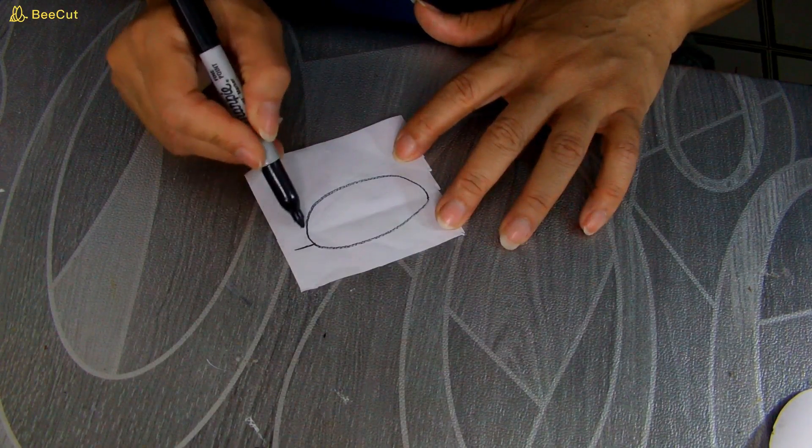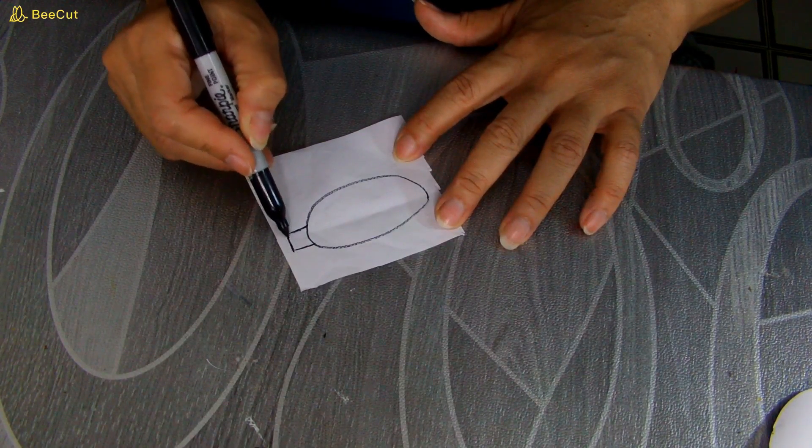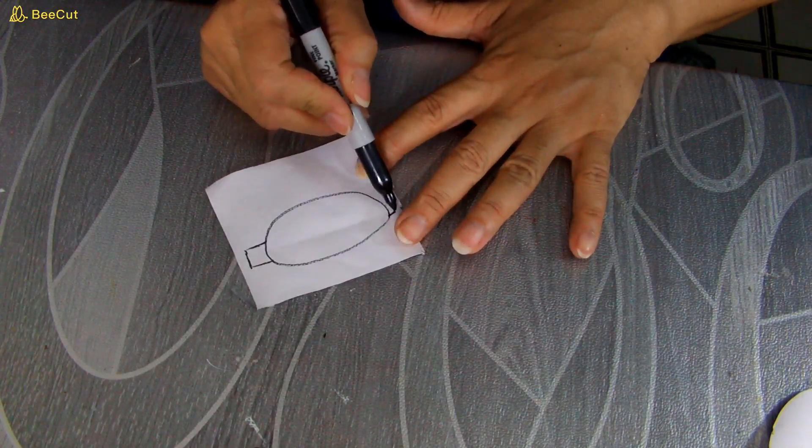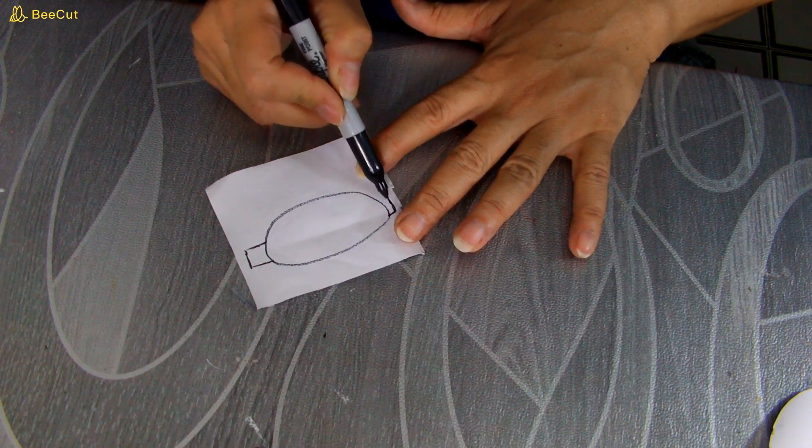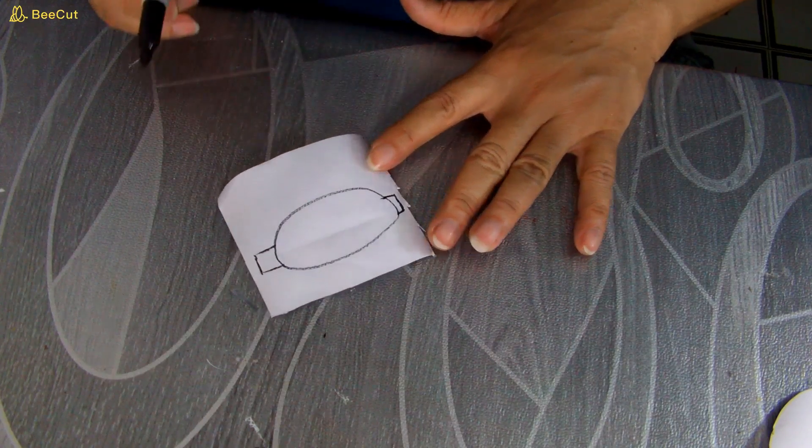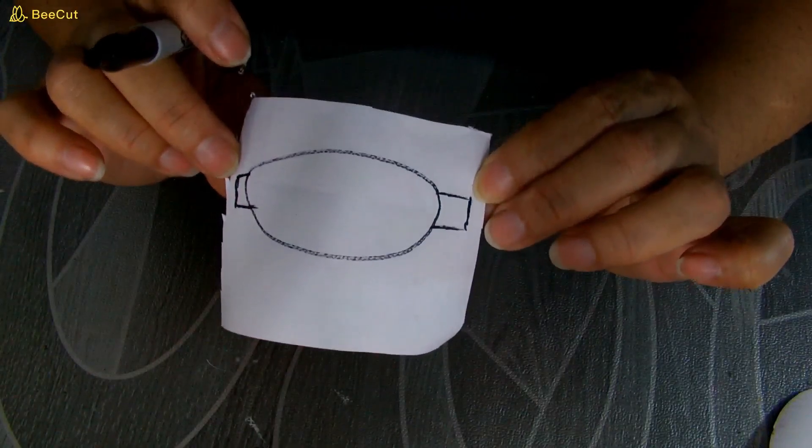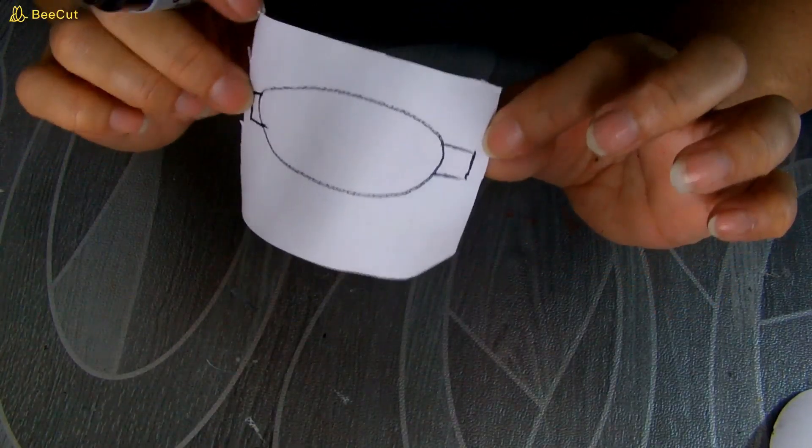Y así del tamaño que usted quiera su lazo. Y simplemente aquí le voy a estar sacando así un cuadradito. Y de este lado una pequeñita. Así le va, así. Puede hacerlo y le va a quedar bonito. Este va a ser el molde. Lo vamos a recortar.